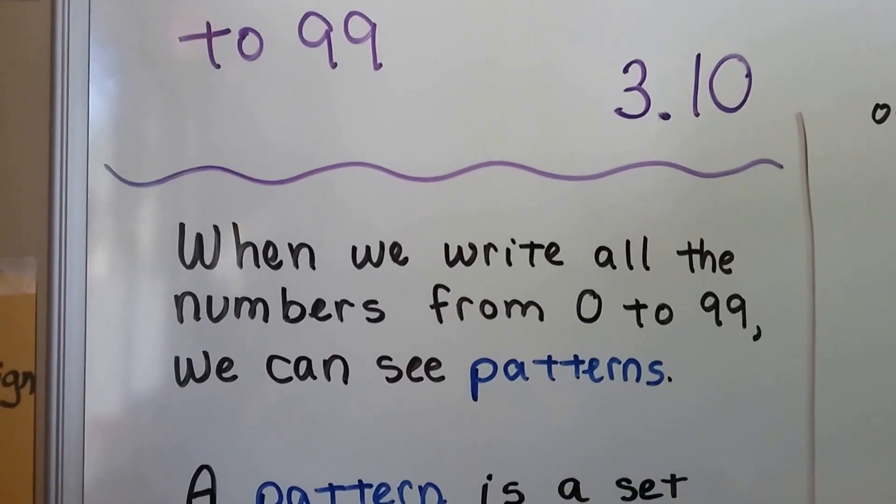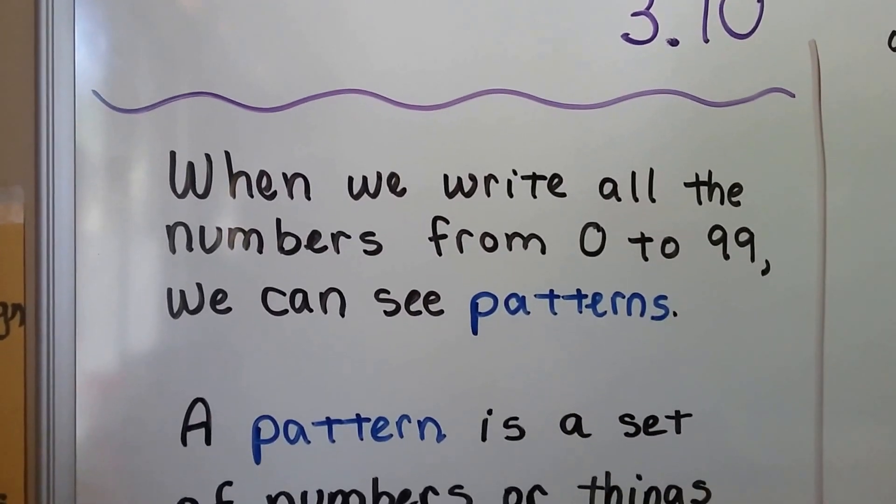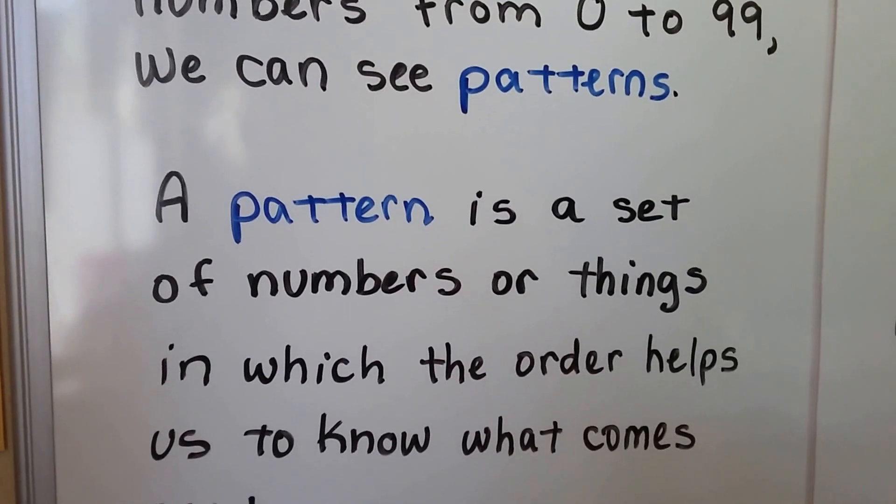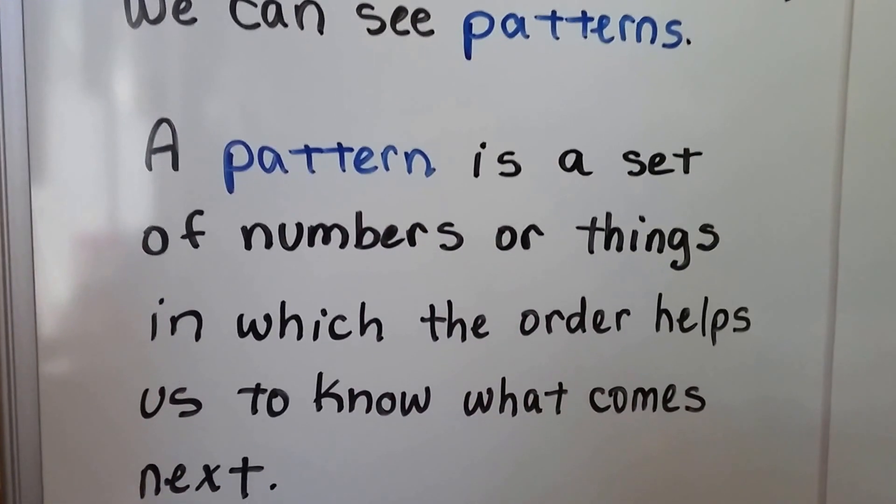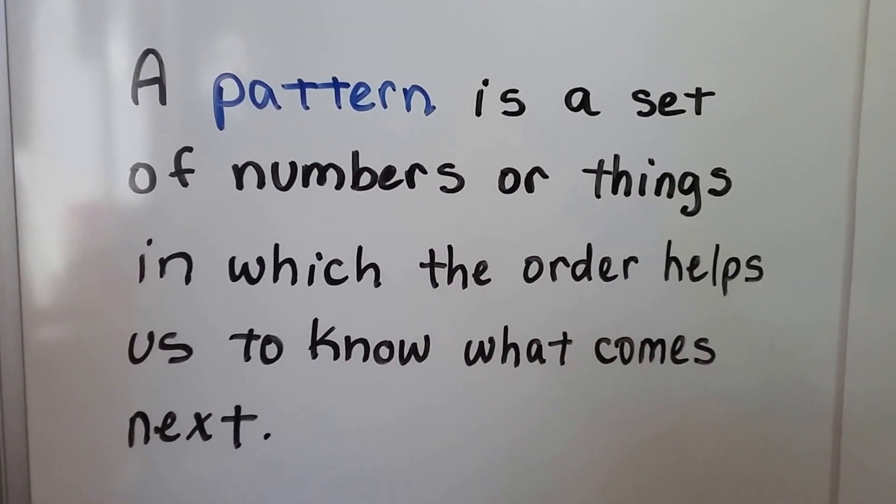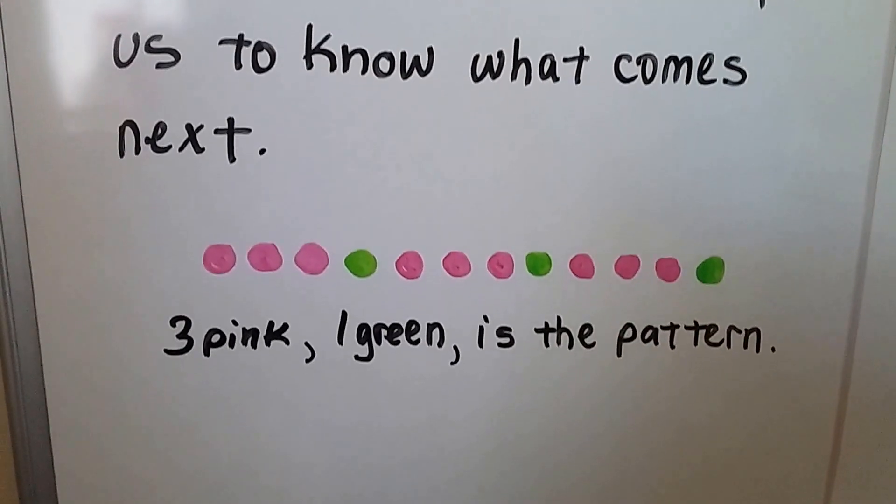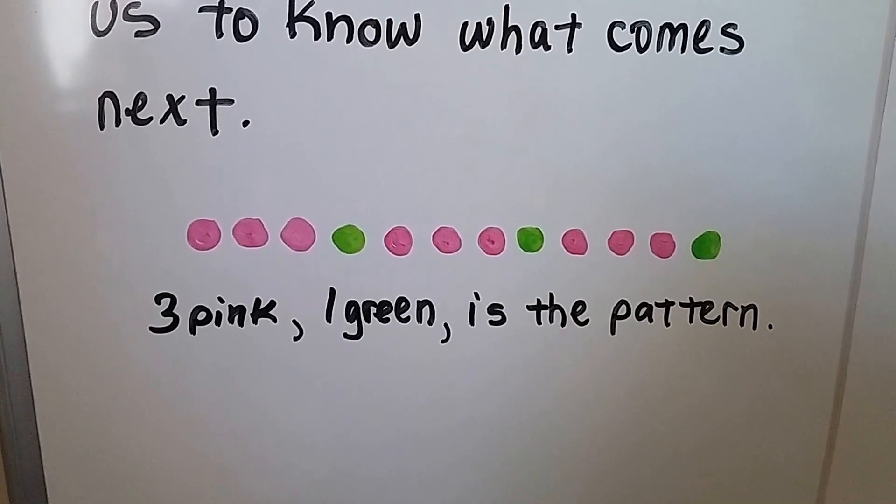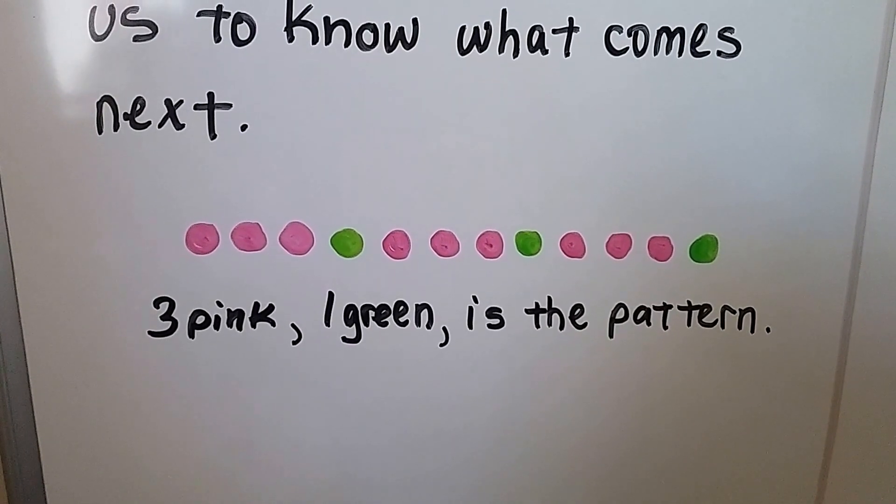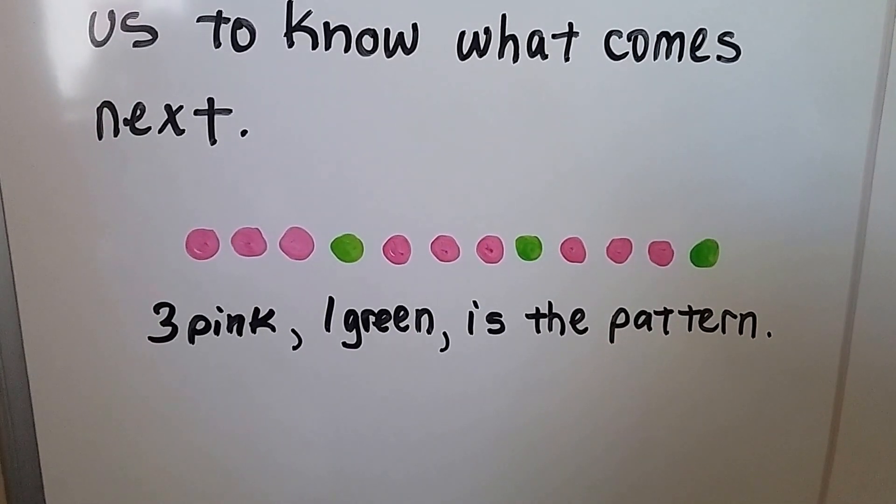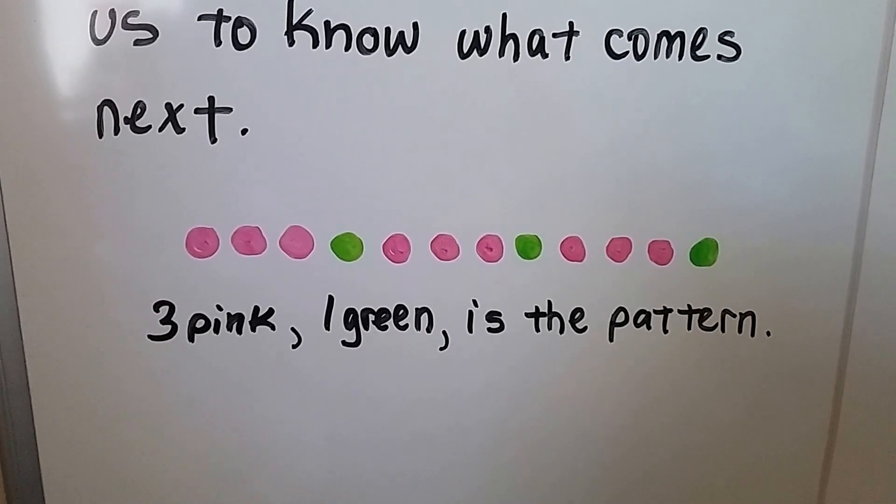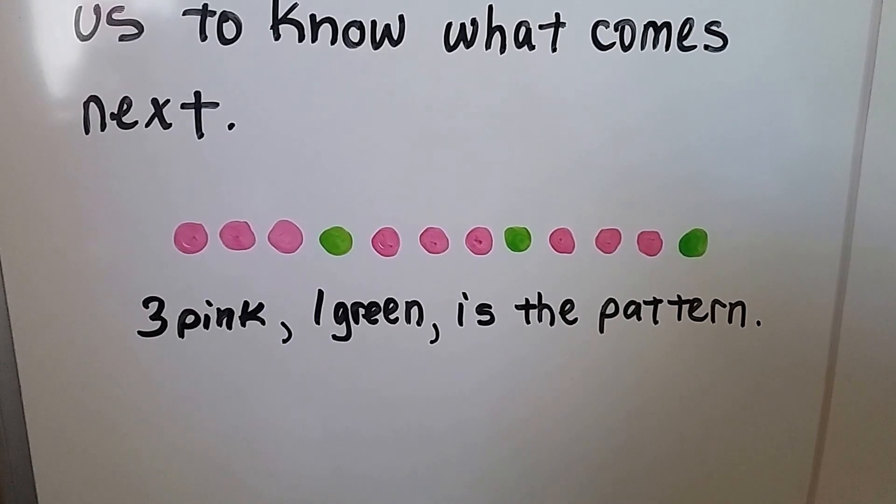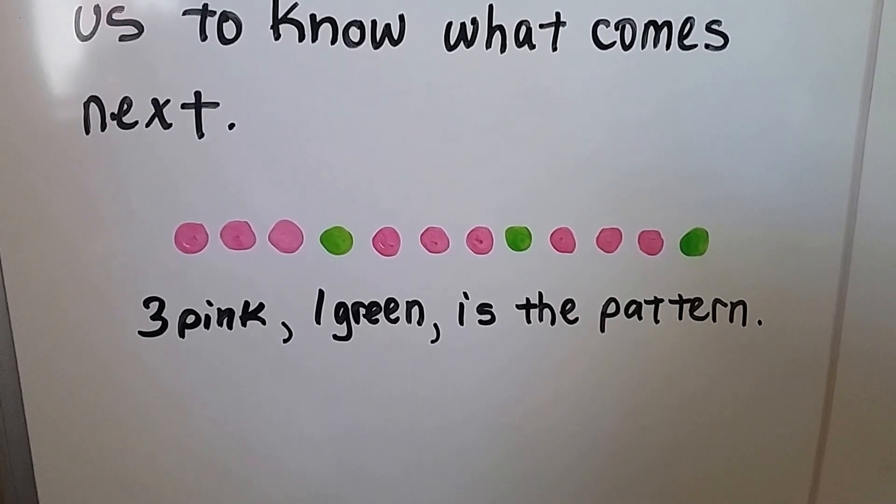When we write all the numbers from 0 to 99, we can see patterns. A pattern is a set of numbers or things in which the order helps us to know what comes next. We see 3 pink, 1 green, 3 pink, 1 green, 3 pink, 1 green. 3 pink and 1 green is the pattern. We can tell what's going to come next. It would be 3 pink, wouldn't it?